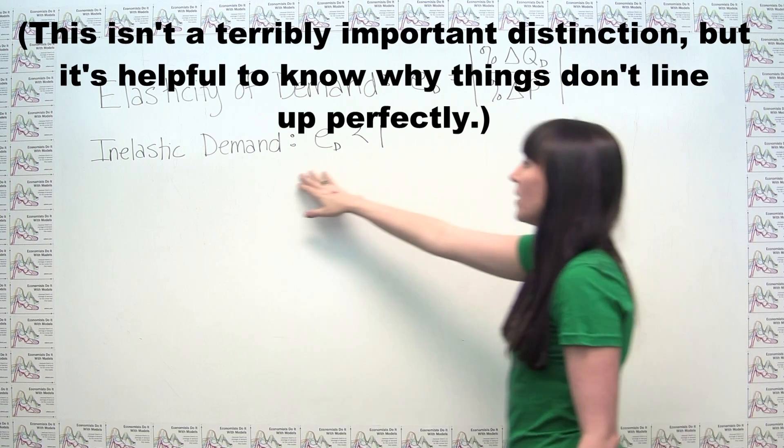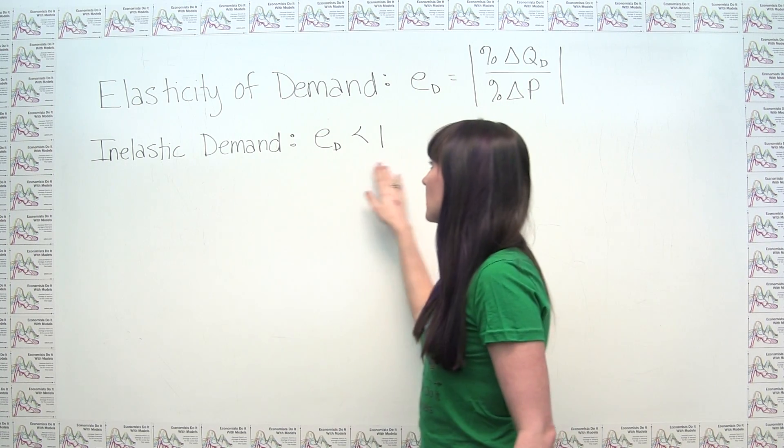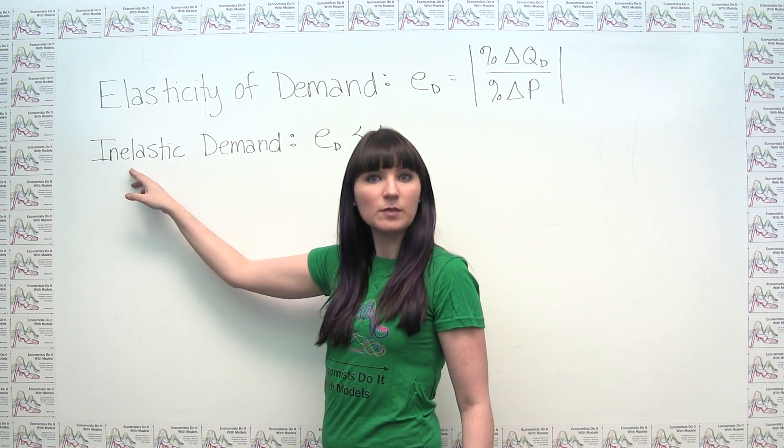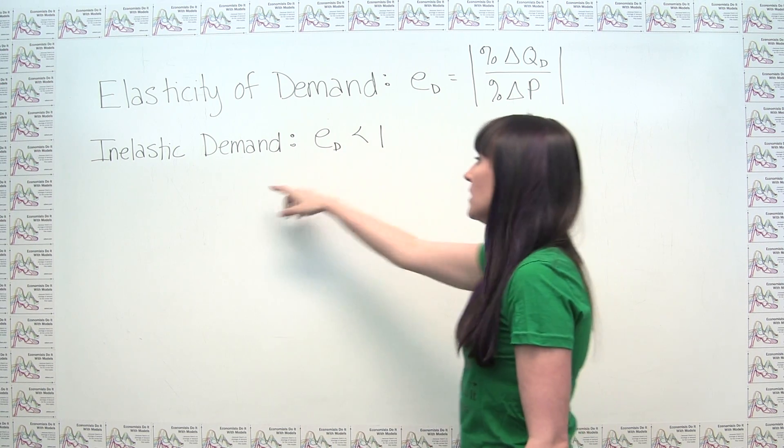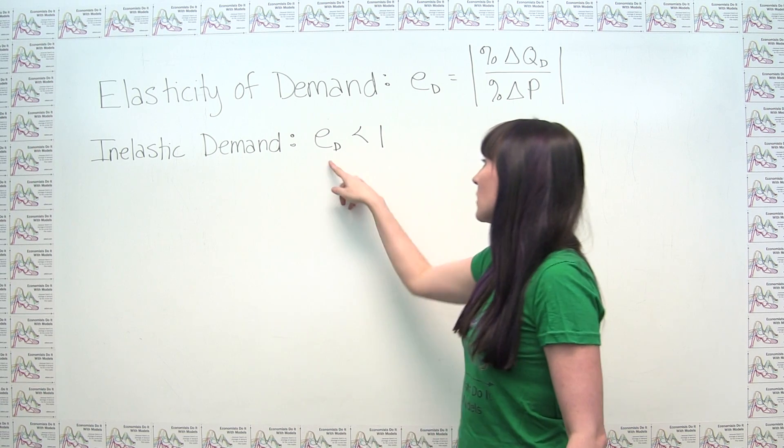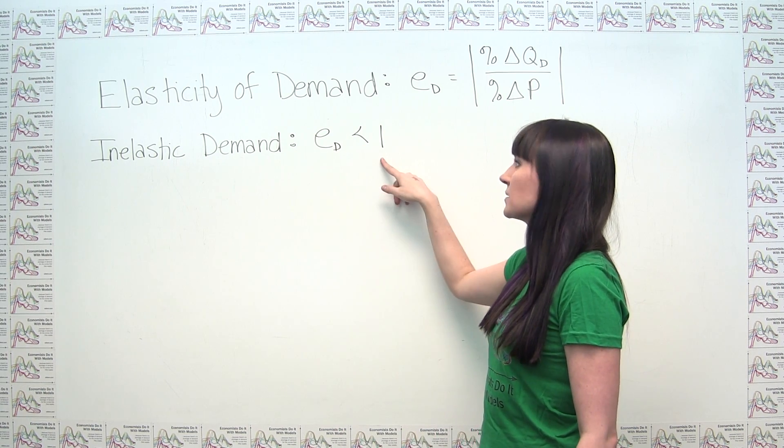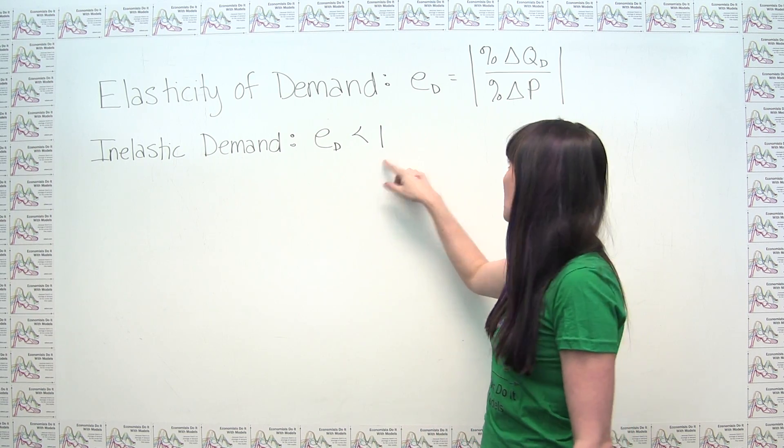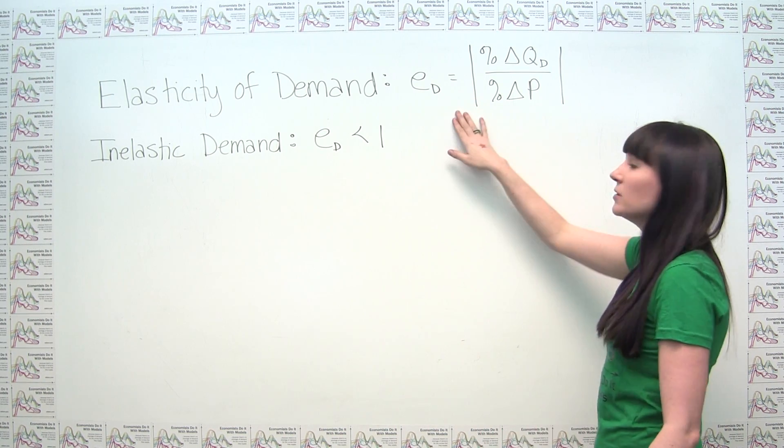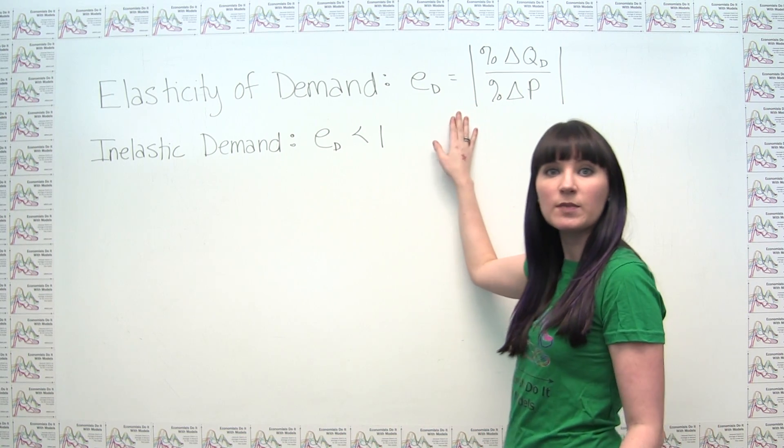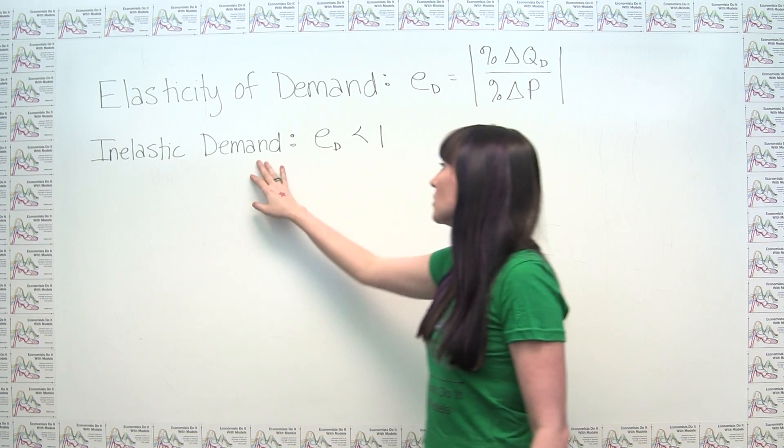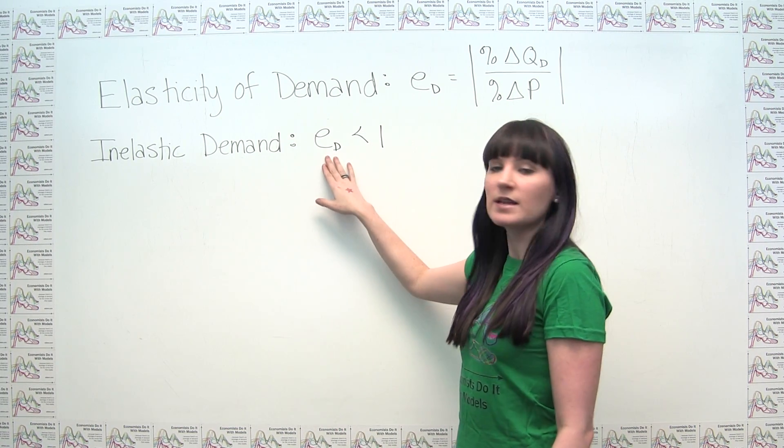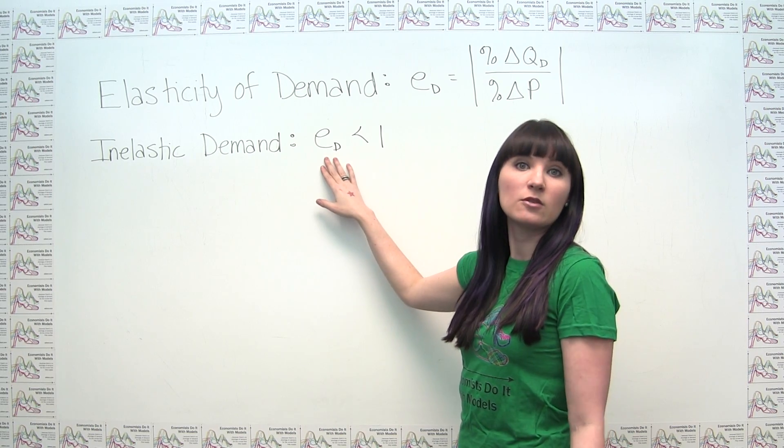And we can think about, because we're going to be talking about what happens with inelastic demand, the way that I've defined elasticity here, inelastic demand would just be where the price elasticity of demand is less than one. If you're not taking the absolute value here and you're keeping your elasticity of demand as negative numbers, then your inelastic demand would be where your elasticity of demand is between negative one and zero.